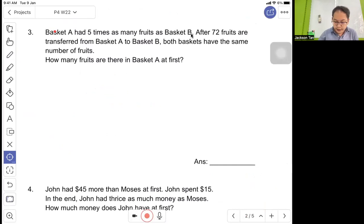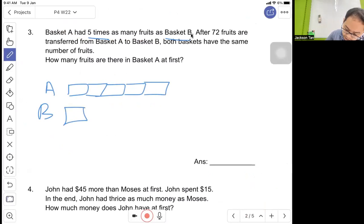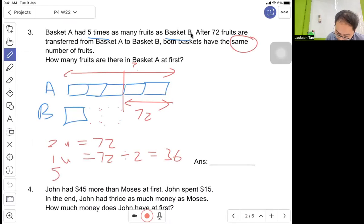Question 3: Basket A has five times as many fruits as Basket B. So A is five times, B is one time. After 72 fruits are transferred from A to B, both of them have the same. You need to transfer two units, so this two units is actually 72. Two units equal 72, one unit will be 72 divided by 2 equals 36. They ask for Basket A at first, so five units equals 36 times 5 equals 180. Basket A has 180.